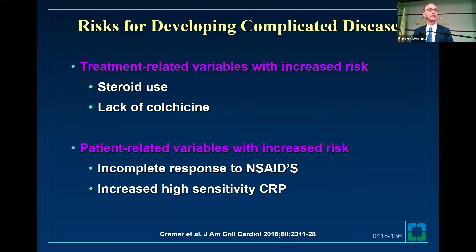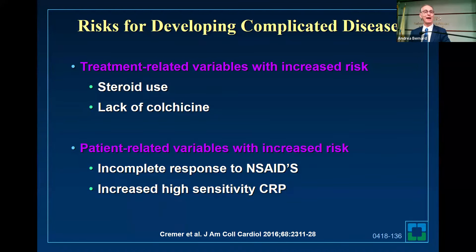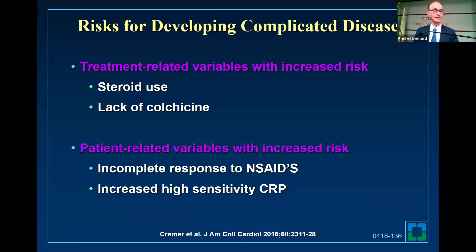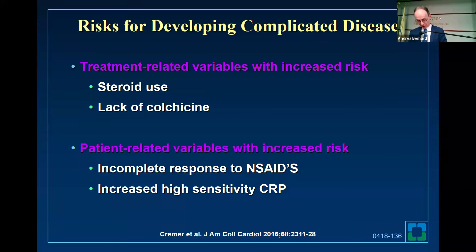Who is going to get this complicated disease? If you go to the ER and they give you steroids, that's a bad thing. If you don't give colchicine, that's also bad. On the other hand, if you don't respond to NSAIDs or have a very high CRP, those are some markers for complicated disease.